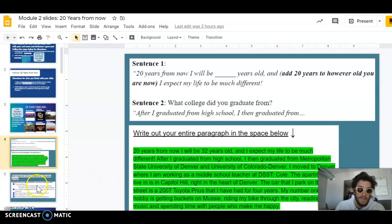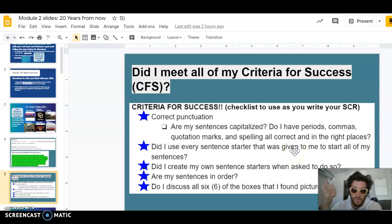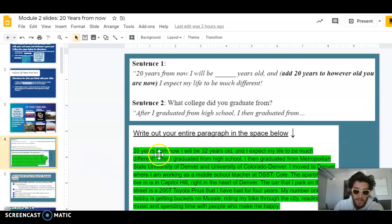For these first two sentences, all of my criteria for success: I have the correct punctuation, I've capitalized sentences, I have periods, commas, my spelling is correct. I used both sentence starters that were given to me—I saw those there, typed those exact words in, and then added based on my information.